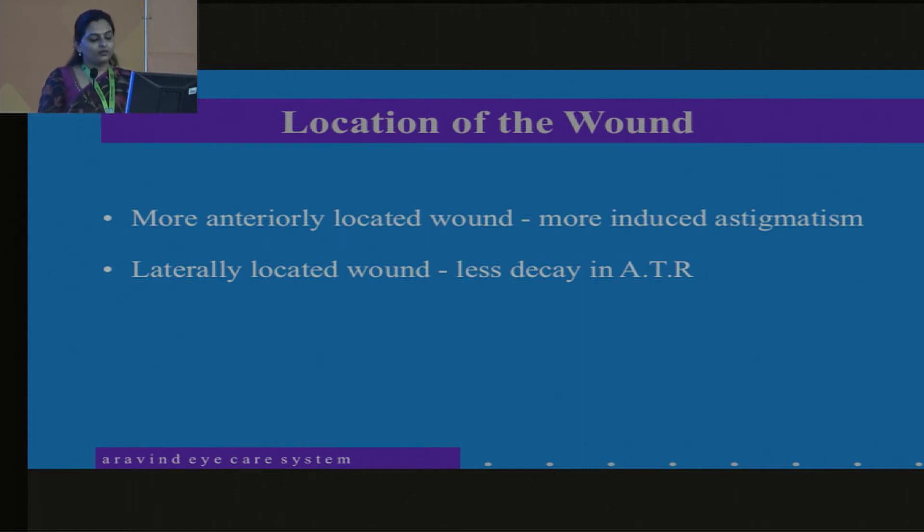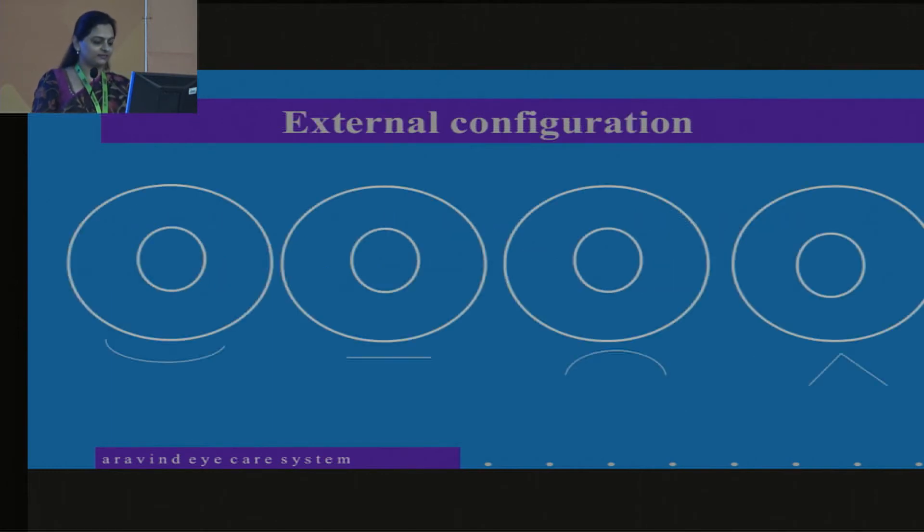So if your wound is going to be more anteriorly located, you're going to induce more astigmatism. So these are some pictures that show different types of external configuration of the wound. The external configuration of the wound largely depends on the size of the nucleus. So if you're going to have a grade 3 to 4 nucleus, you cannot make a small incision. We definitely have to make something bigger than 6 millimeters incision.